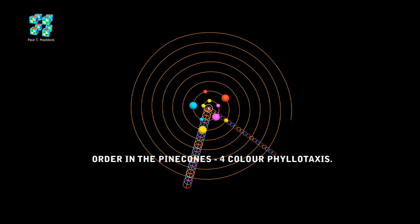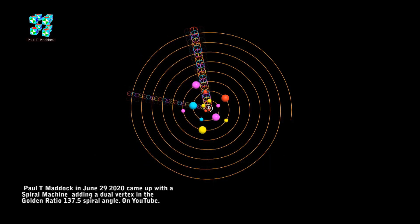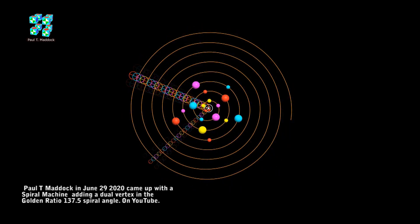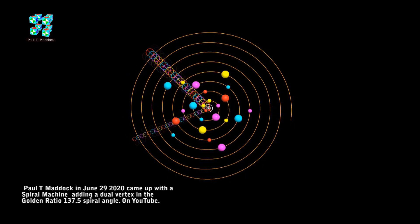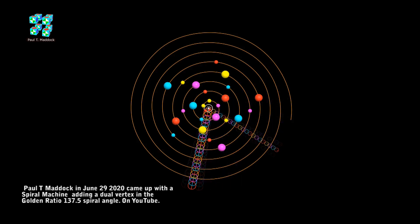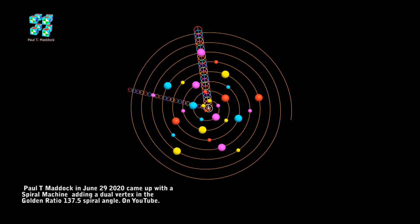Now in June last summer, I came up with a five spiral machine. Watch as this machine produces colored balls going around at 137.5 degrees. It's producing a wonderful five wing pattern.